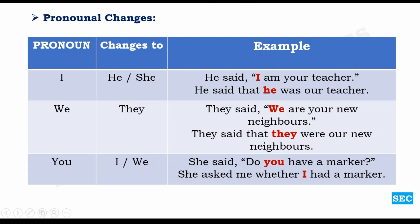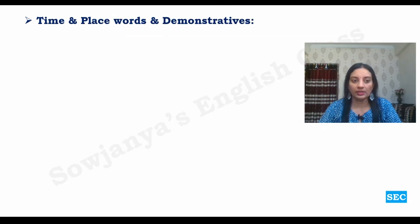Second person pronoun 'you' may either change to 'I' or 'we' depending upon the context. For example: 'She said, do you have a marker?' becomes 'She asked me whether I had a marker.' So this 'you' has been transformed into 'I' in reported speech.